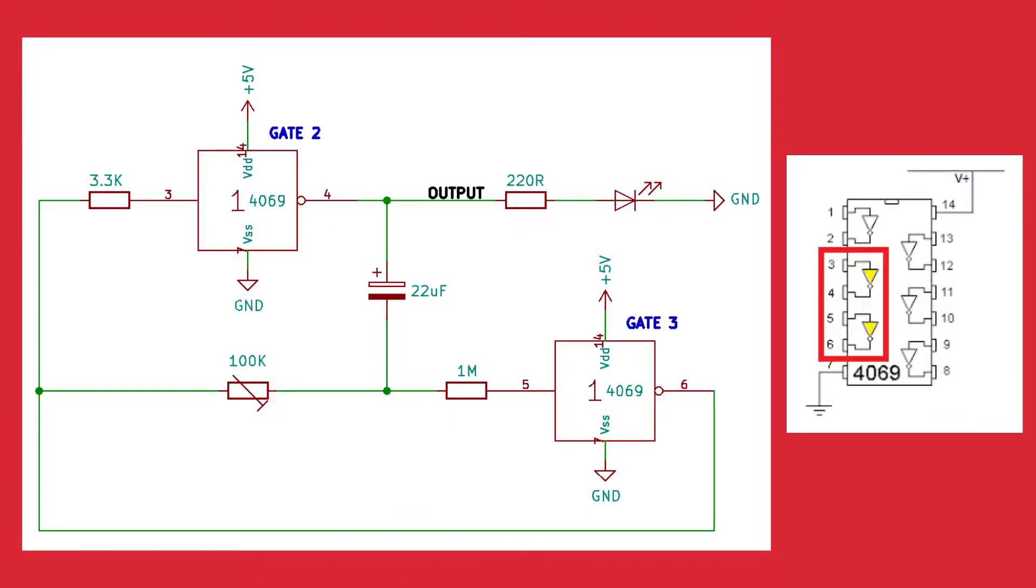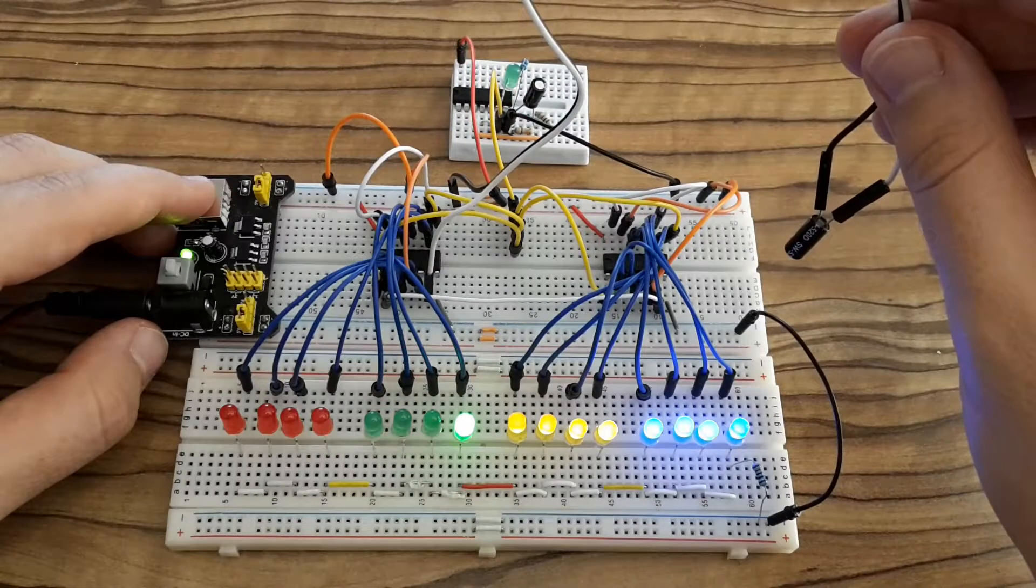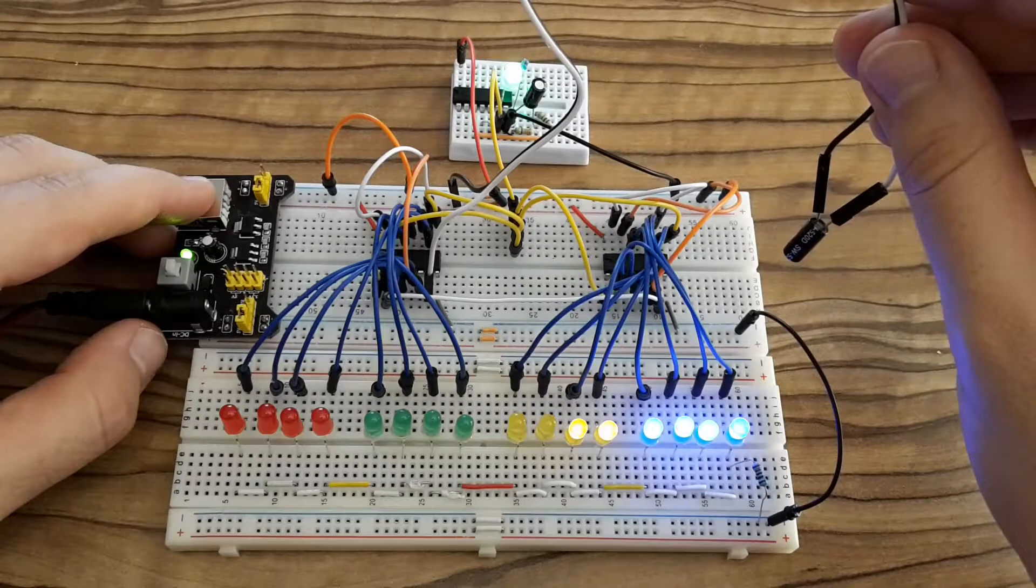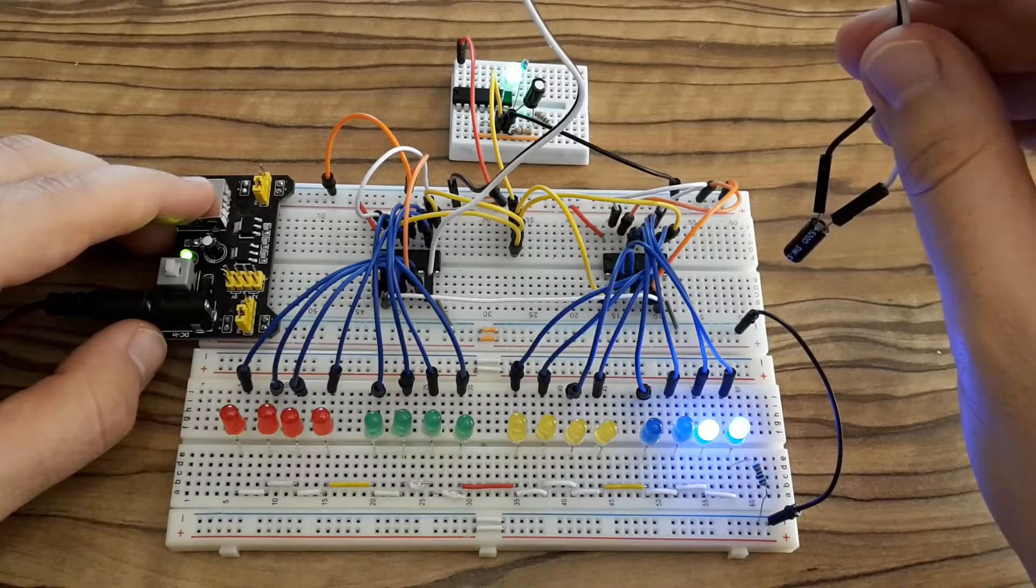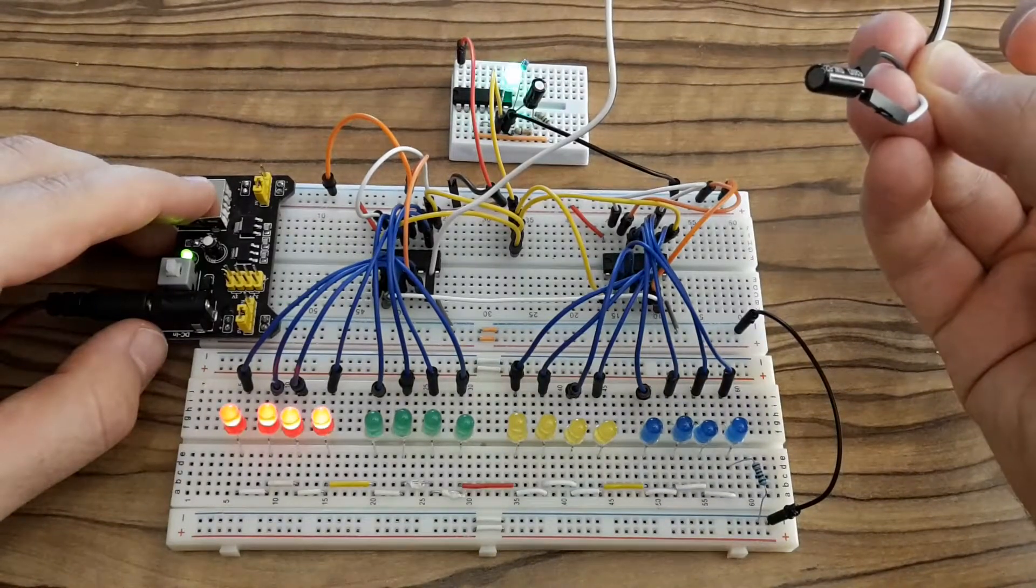Therefore I drew a schematic for that. It uses just two gates from the hex inverter. And if I put it all together it looks like this. Now I don't need to manually generate the clock signal because it's generated by the clock generator. And this is the way how the hourglass works.